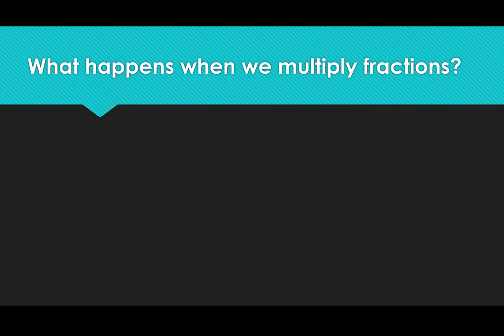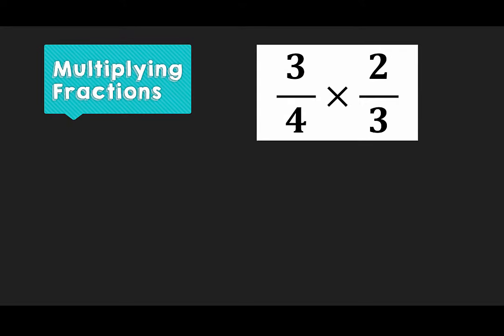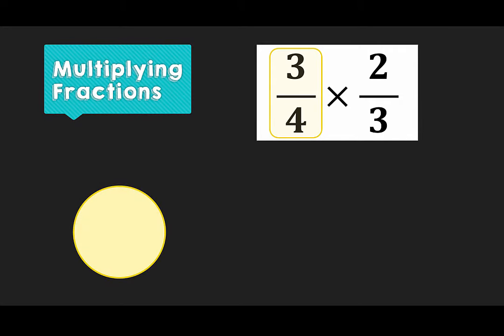So let's have a look at an example. We've got 3 quarters times 2 thirds. We're going to start with our 3 quarters. First we need to represent this as part of our whole.